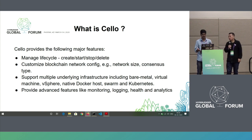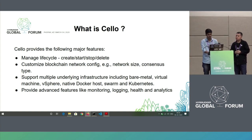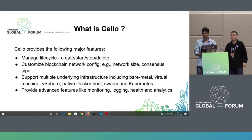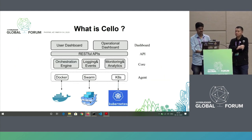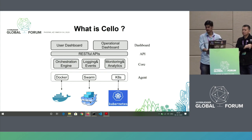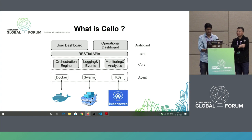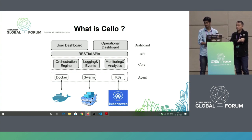Cello allows us to manage the lifecycle of a blockchain. We can create, start, stop, and delete nodes. We can customize a blockchain network configuration, like network size, consensus type, and database type. We have a few different underlying infrastructures available — we can deploy it on bare metal, Docker, Kubernetes, et cetera. And we also provide advanced features like monitoring, logging, health, and analytics of our chain. This is the architectural design of Cello. At the top layer we have the dashboards and the core layer. Both of these are connected with APIs made in Django, and the core layer is also made in Python and Node.js. The last layer is the agent layer where we can have multiple infrastructures like Docker, Swarm, Kubernetes, et cetera.